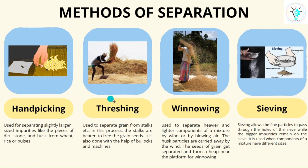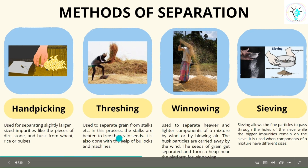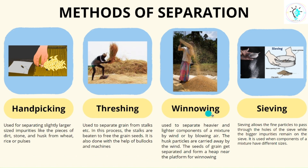The second process of separation is threshing. Threshing is done by beating the grain seeds. In this picture we can see that the stalks are beaten to free the grain seeds. It can also be done with the help of blocks or even machines. The third method is winnowing, which separates the heavier component from the lighter component. The lighter component is blown away by air and the heavier component drops and forms a heap near the platform.